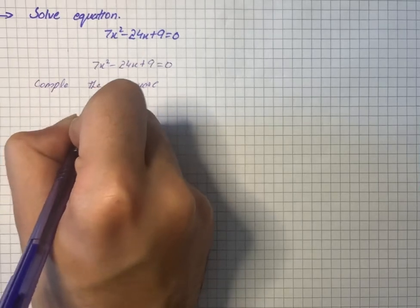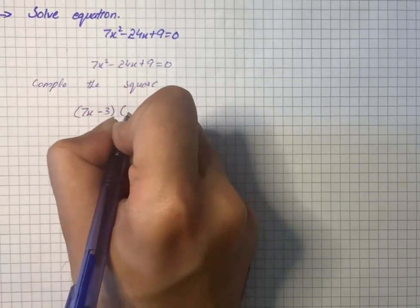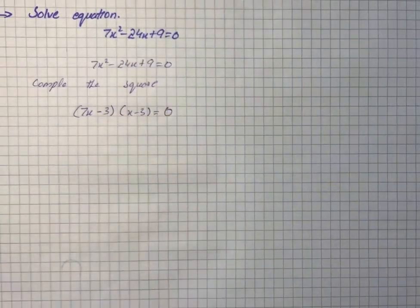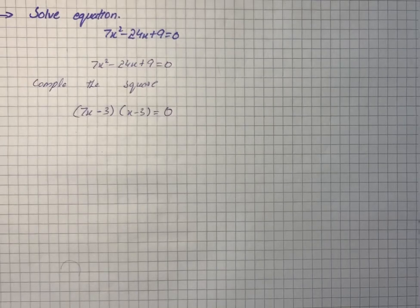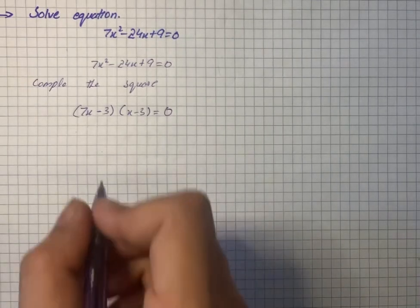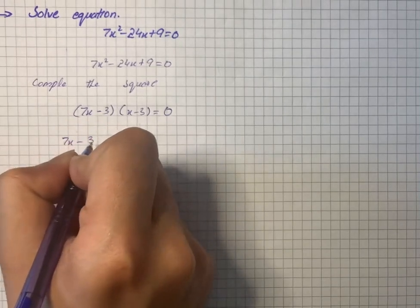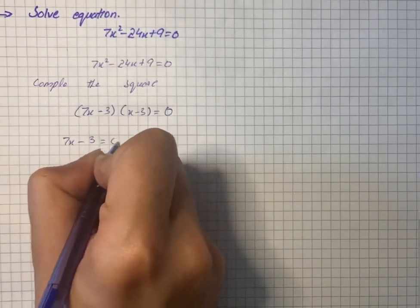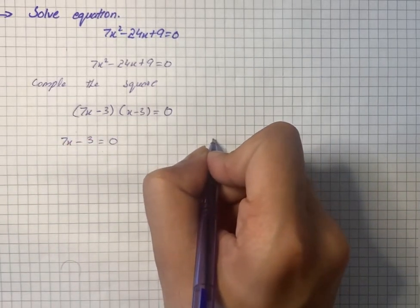We have (7x - 3)(x - 3) = 0. So what we're going to do is use 7x - 3 = 0 first, and on the other side we will